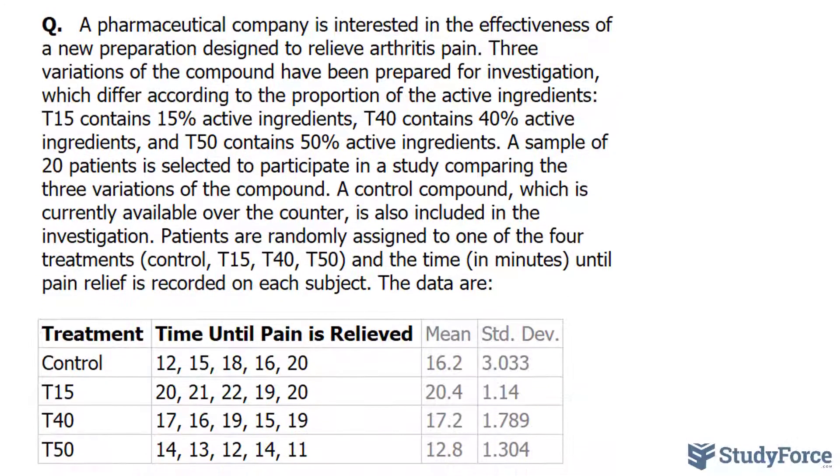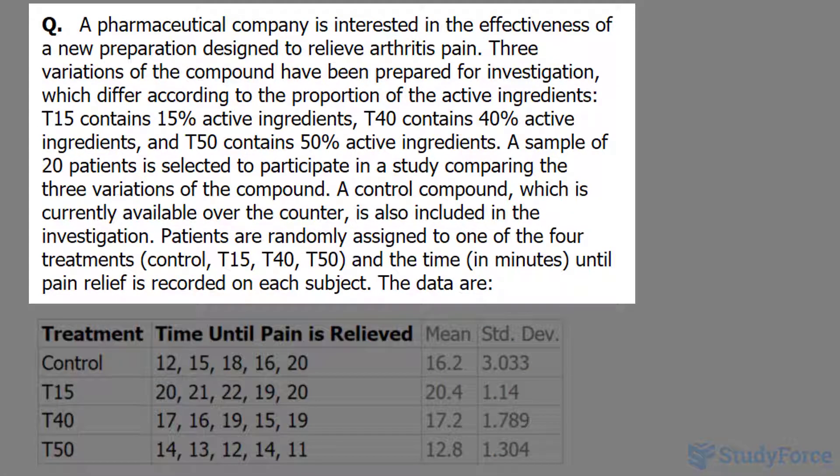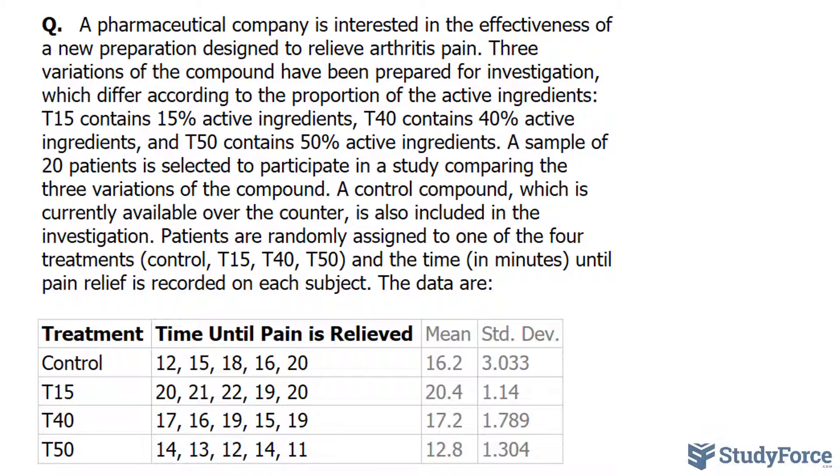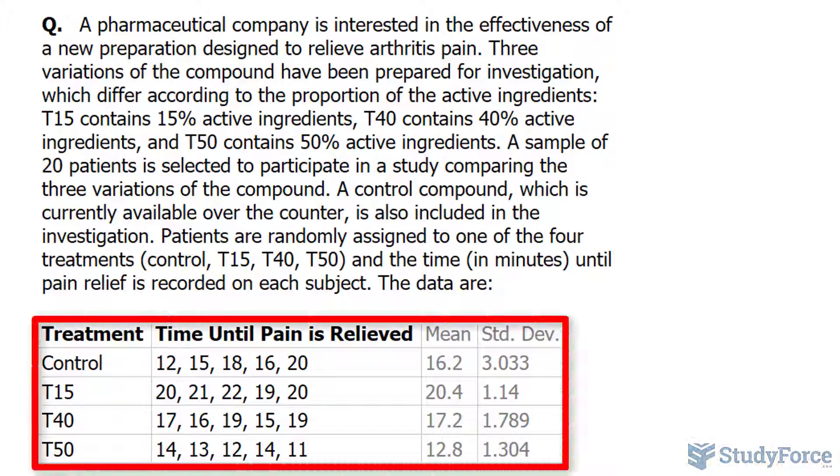Assume your question is the following: A pharmaceutical company is interested in the effectiveness of a new preparation designed to relieve arthritis pain. Three variations of the compound have been prepared, which differ according to the proportion of the active ingredients: T15 contains 15%, T40 contains 40%, and T50 contains 50% active ingredients. A sample of 20 patients is selected to participate in a study comparing the three variations of the compound.